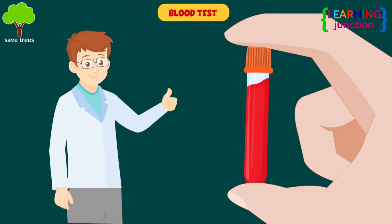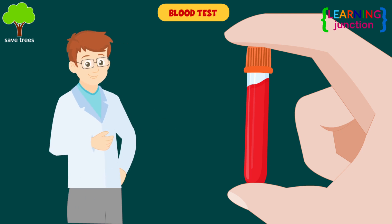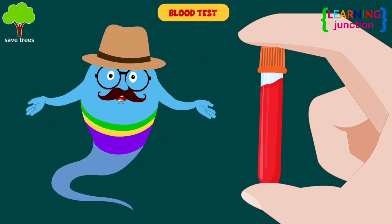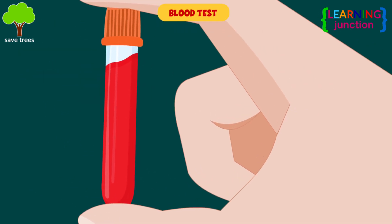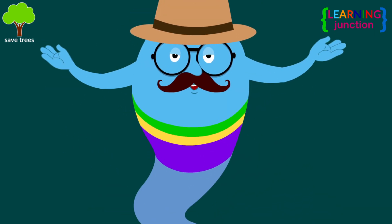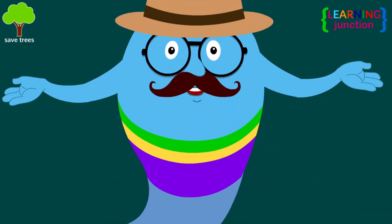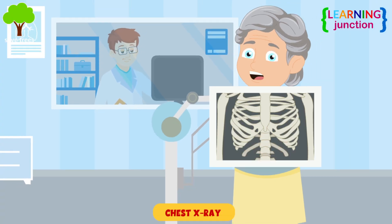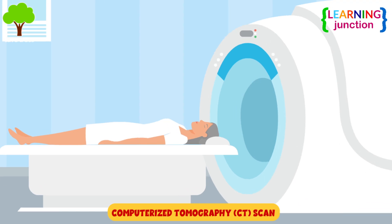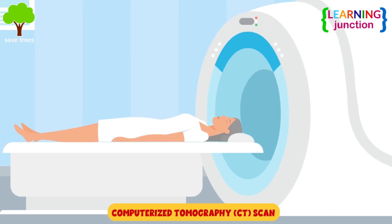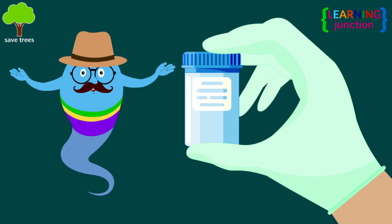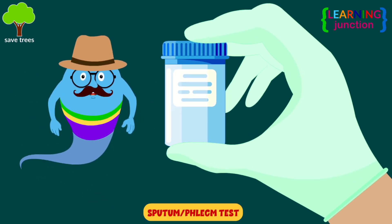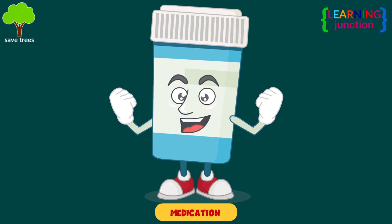Blood test: these tests, also called interferon gamma release assays, measure the response when TB proteins are mixed with a small amount of your blood. Those tests don't tell you if your infection is latent or active. The doctor may order a chest X-ray or CT scan to determine if you have active TB disease or latent TB, as well as a sputum test to identify the bacteria in your body and choose the most efficient medication.